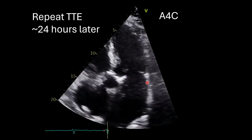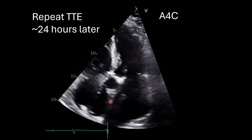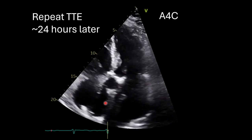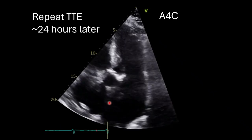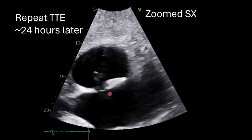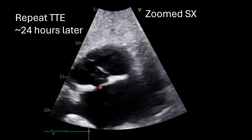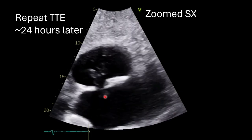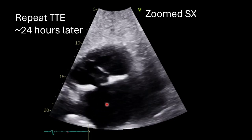If we move to the apical four-chamber view again, you'll notice if you look very closely through the interatrial septum, there is an echogenic mass right here. This is the clot actually becoming stuck in the interatrial septum. In this sub-costal view zoomed in on the interatrial septum, you'll notice the clot wiggling through the interatrial septum.